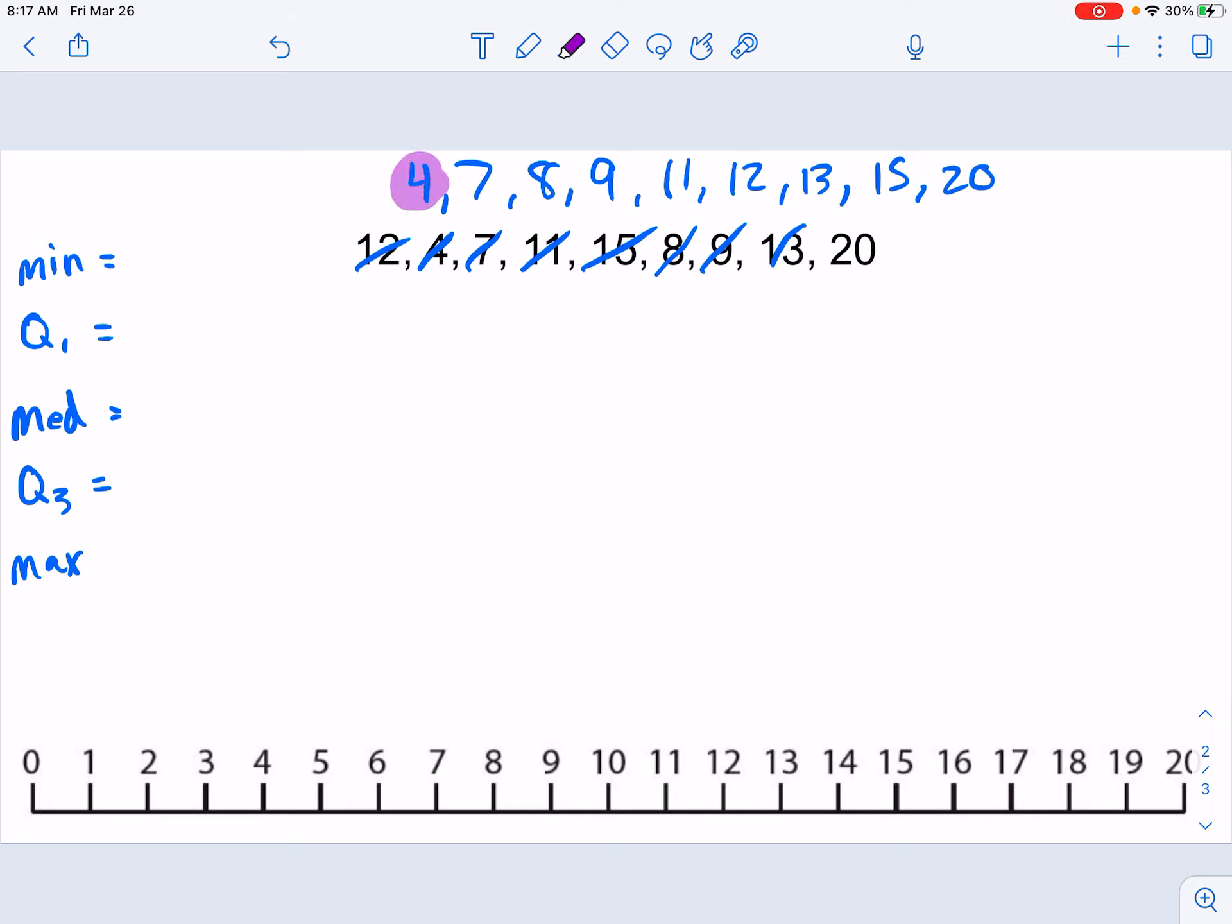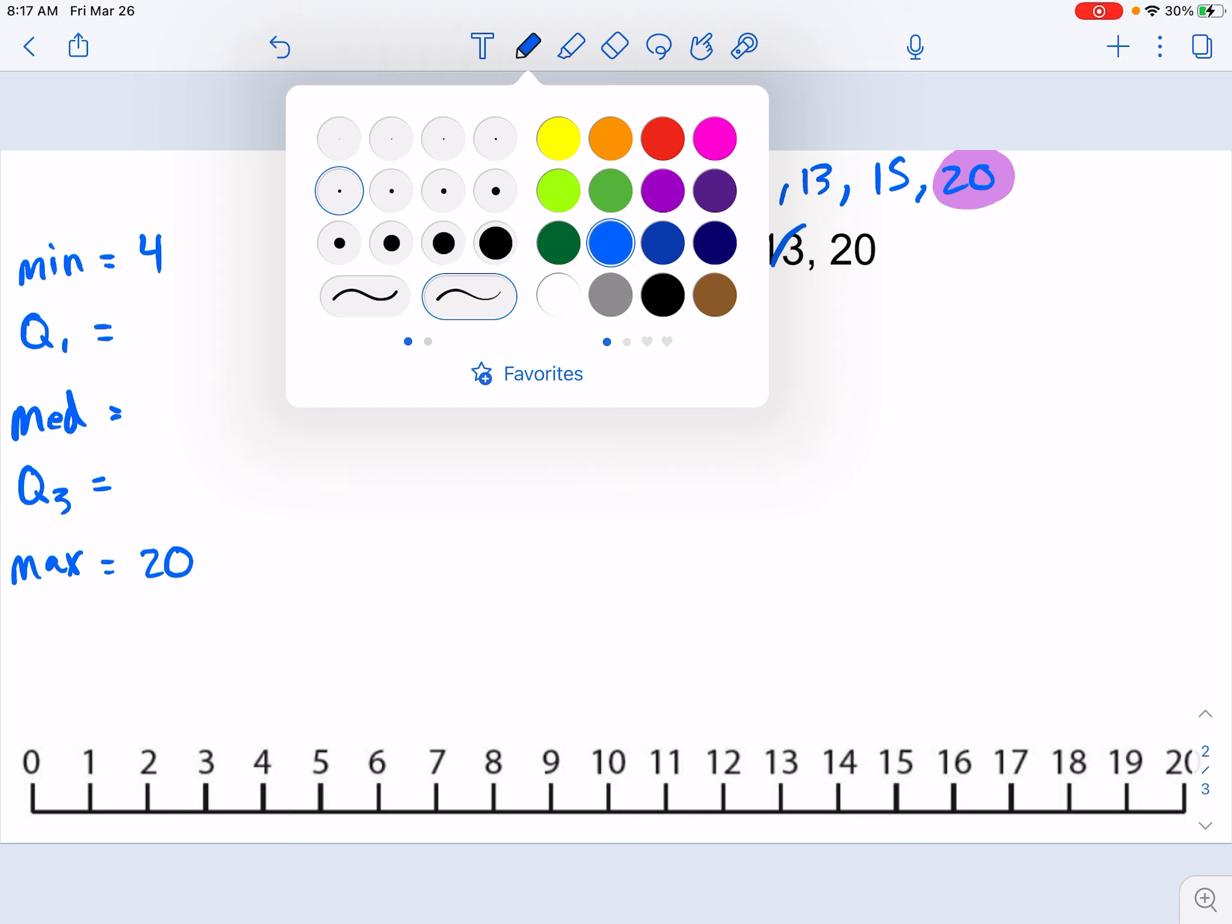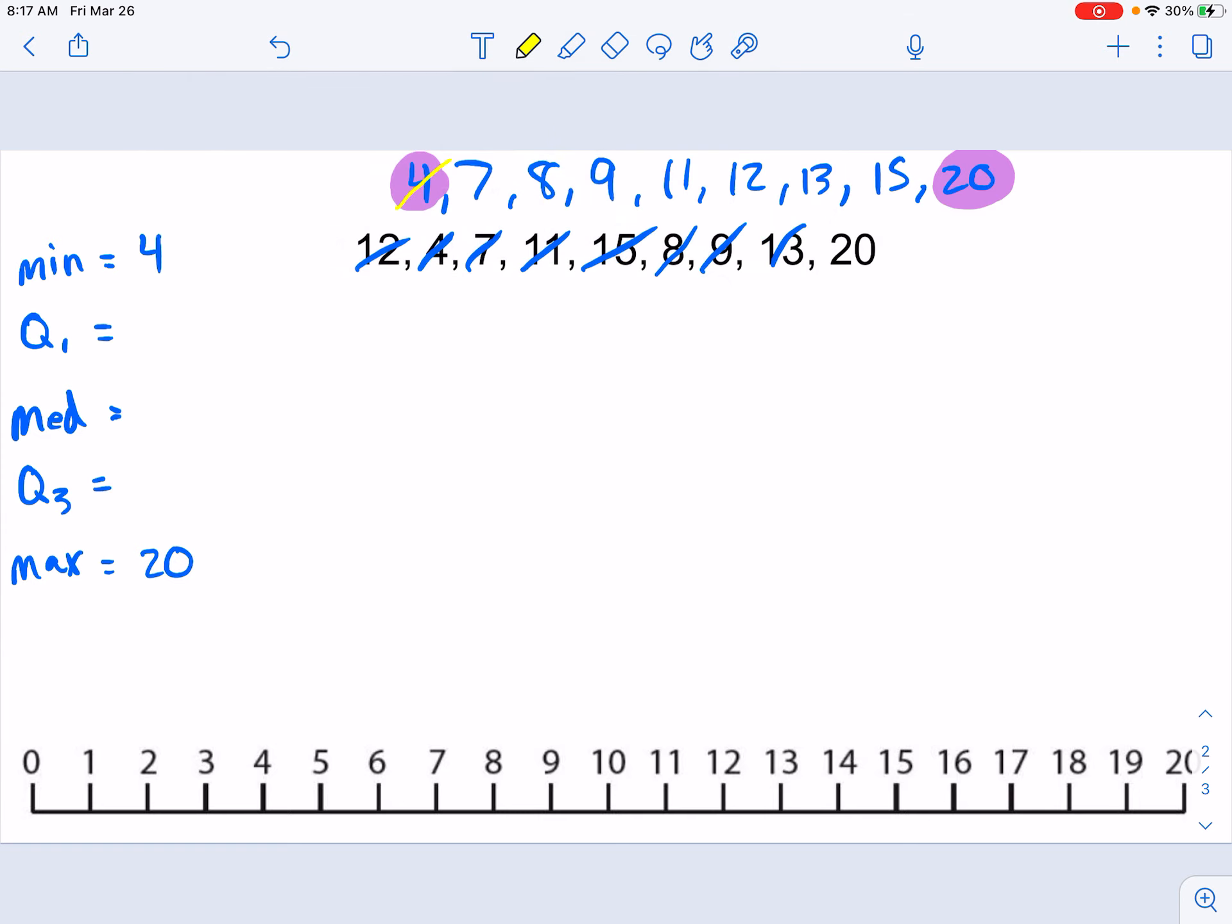So I see my minimum value is 4. My maximum value is 20. And now we can find the median. Remember the median, we're looking for the middle number. So if we go through to look for the middle value, we have one number in the middle, 11. So 11 is our median.